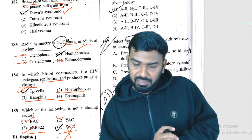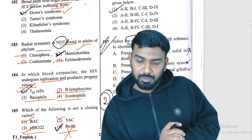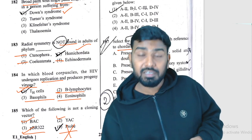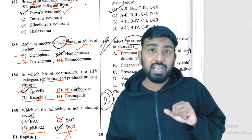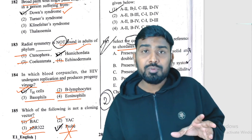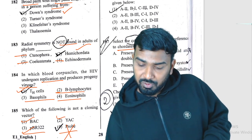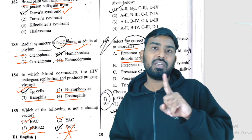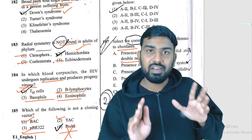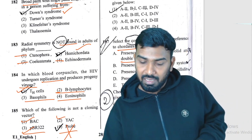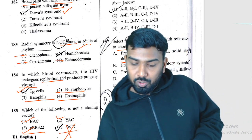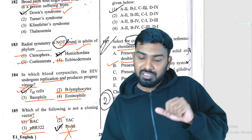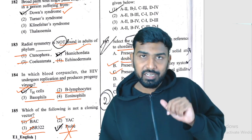Question 187: correct statement regarding chordates. Solid double nerve cord is NOT a chordate feature — it is a non-chordate feature. Closed circulatory system — yes, this can be a chordate feature. Presence of paired fins — also a correct chordate feature.